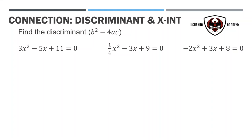In this video, we're going to talk about the discriminant and x-intercepts. The discriminant, if you don't know, is the square root piece inside of the quadratic formula. The discriminant is often looked at as the kind of dirty little shortcut to actually figuring out the quadratic formula.